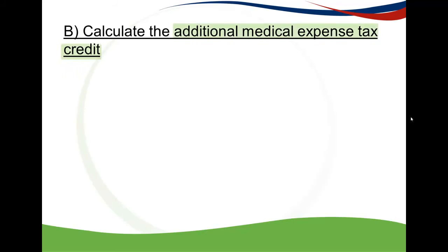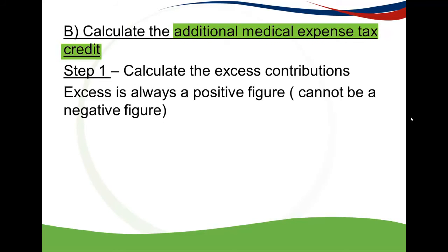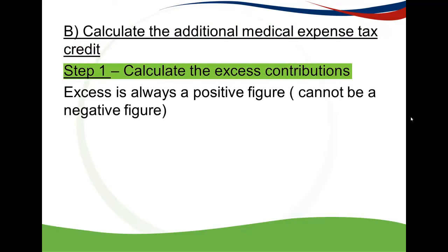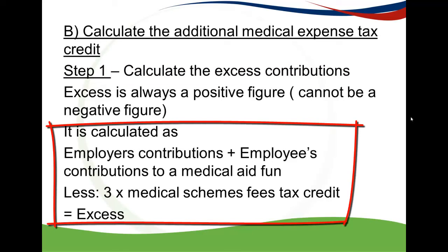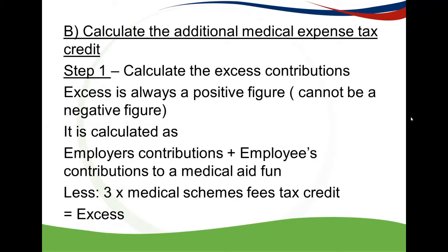Part 2 is calculating the additional medical expense tax credit. First, calculate the excess contributions — remember, the excess is always a positive figure and can never be negative. It's calculated by taking the employee's contributions plus the employer's contributions to the medical aid fund, less 3 times your medical schemes fees tax credit. This is the key difference from Part 1: where a person is younger than 65 with no disability you deduct 4 times the medical schemes fees tax credit, but here — where a person is 65 or older, or younger than 65 with a disability — you deduct 3 times the medical schemes fees tax credit.